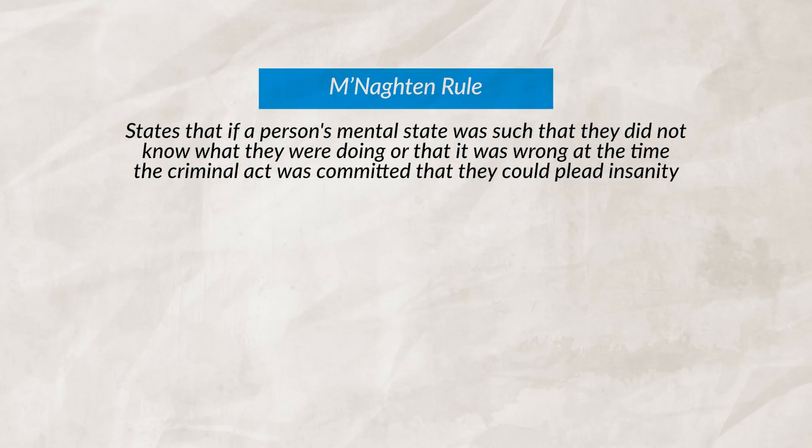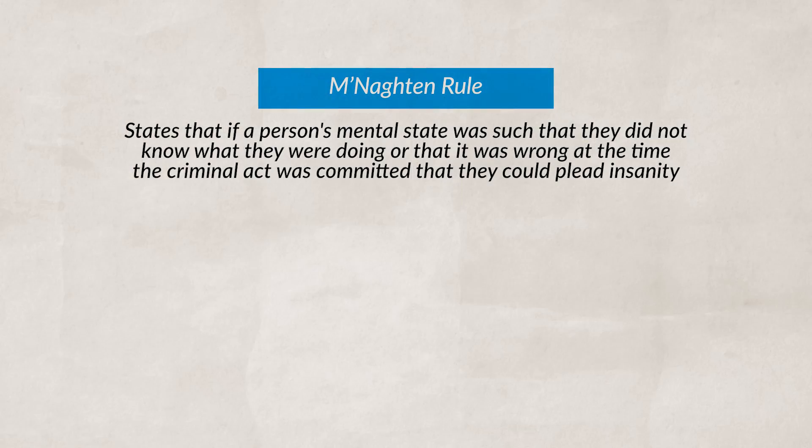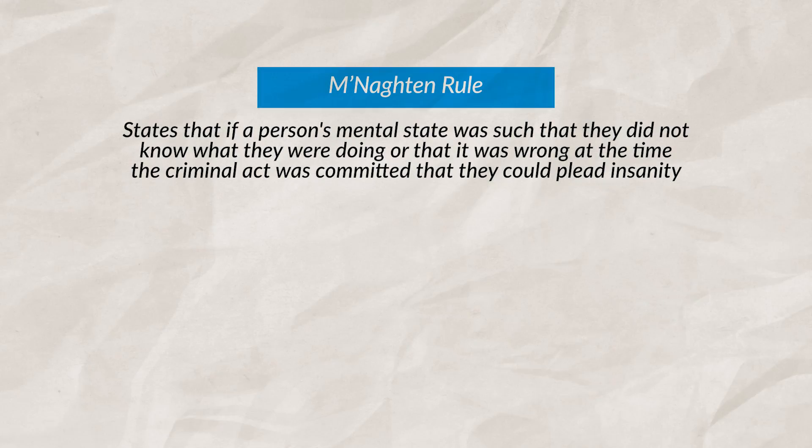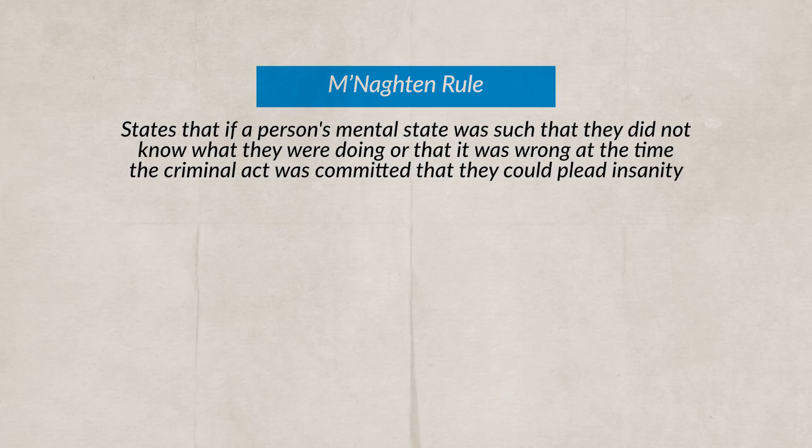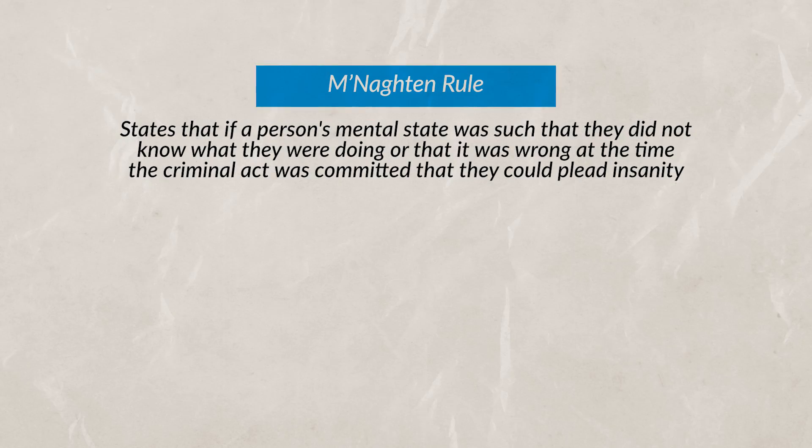Courts often look at an insanity defense in a couple of different ways. One way is using the McNaughton Rule, which looks to see if an individual is able to determine right from wrong. This rule focuses on the cognitive or moral incapacity of an individual. Importantly, this only applies at the time the crime was committed — the individual must have been mentally incapacitated by a mental disorder, causing them not to understand the impact of their actions.